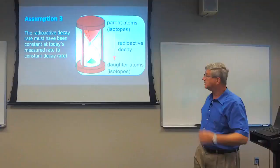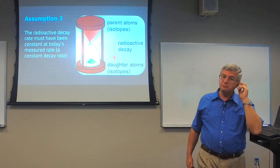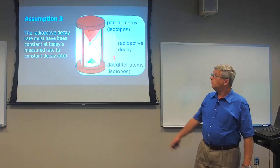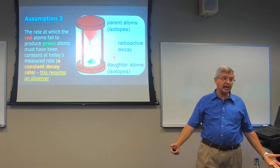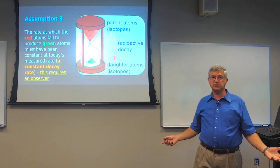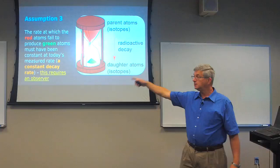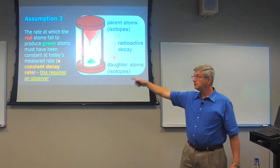Assumption number three: the radioactive decay rate must have been constant at today's measured rate. If your mischievous 10-year-old puts a few drops of water inside the glass bowl and clogs up the grains, the rate of falling changes. If the radioactive decay rate has changed in the past, the clock can't be used as an accurate time piece. This requires a geologist to have been there for millions of years watching and measuring — but we've only measured these decay rates in the laboratory in the last 80 years.